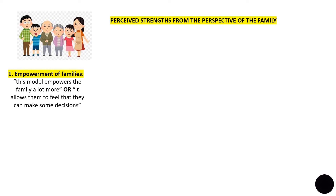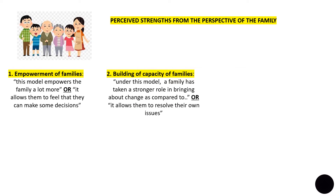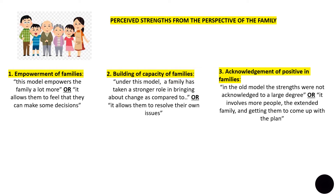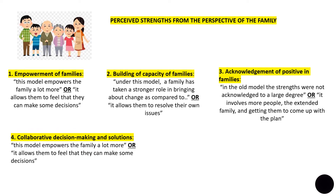So first we focus on the data collected from the families — how from the text of the families some of the themes were identified and then codified into a report. The first theme identified was empowerment of families. You can see the text in quotation marks and how this text directly provided the identification of the theme. Sometimes the text will clearly mention the theme — for example, 'this model empowers the family a lot more' — hence the theme of empowerment of families. Sometimes it will be a bit indirect, like 'it allows them to feel that they can make some decisions,' which indirectly relates to empowerment of families. The next theme is building of capacity of families — for example, 'a family has taken a stronger role in bringing about change' or 'it allows them to resolve their own issues.'